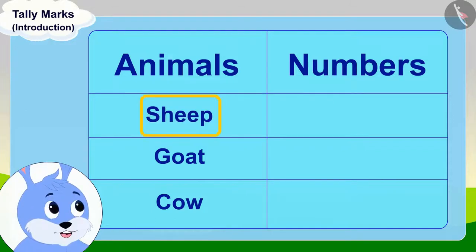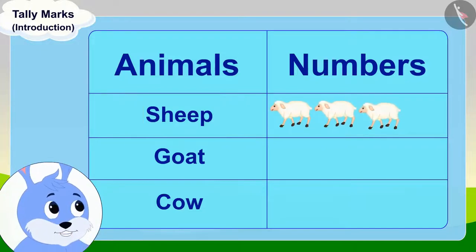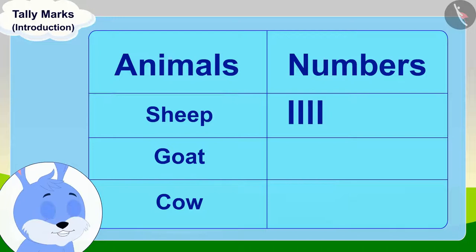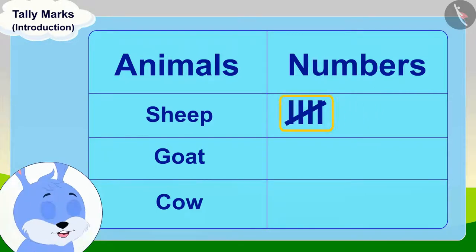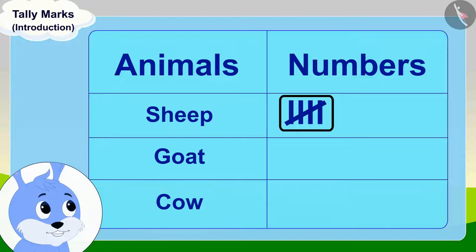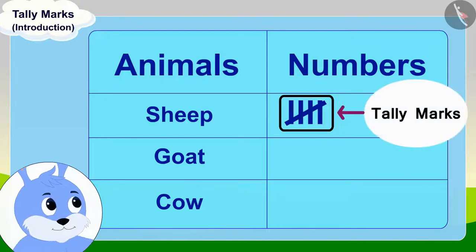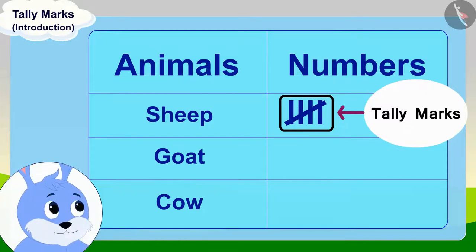Suppose you want to count your sheep first. You first draw four lines like this for four sheep. And then, for the fifth sheep, make a slant line like this across those four lines. We call these groups of five lines tally marks. You can easily count your sheep by using tally marks.